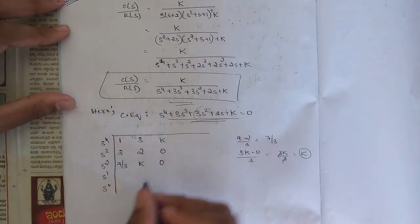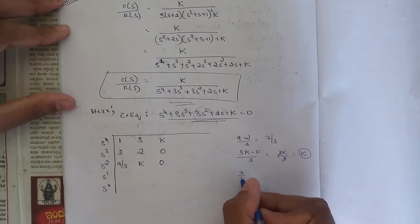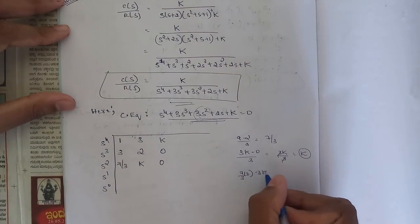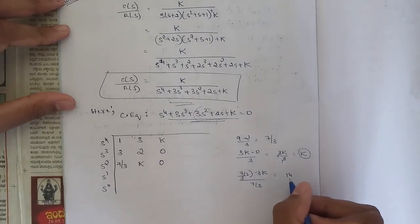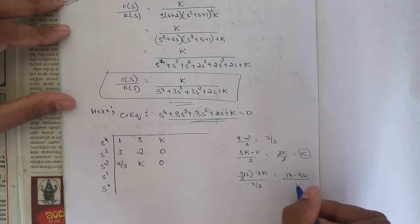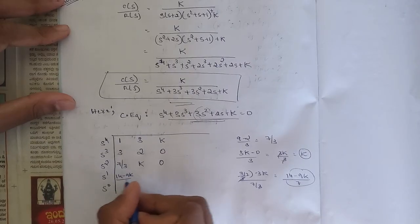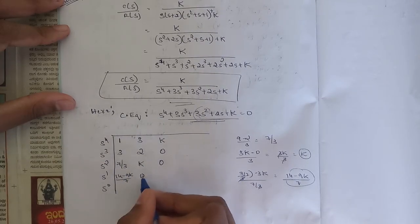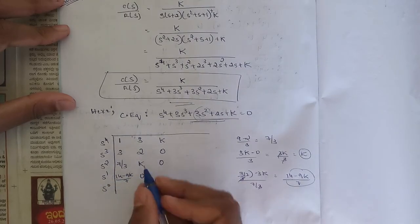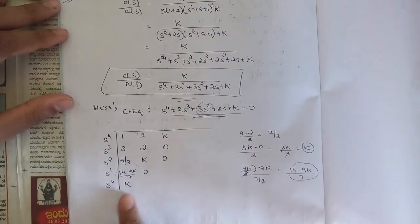The s² row is: 7/3, k, 0. For the s¹ row, compute: (7/3×2 − 3k)/(7/3) = (14−9k)/7. The second element is 0. For s⁰, similarly the element simplifies to k.